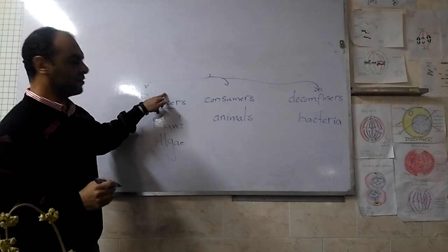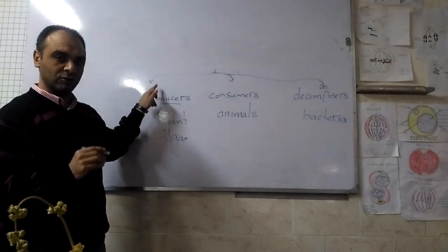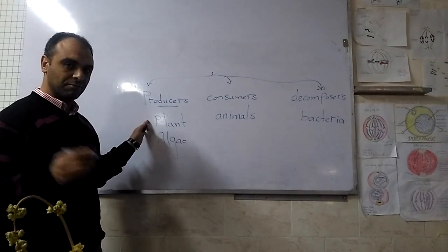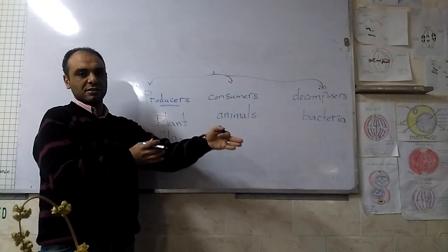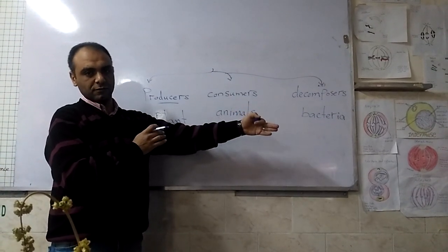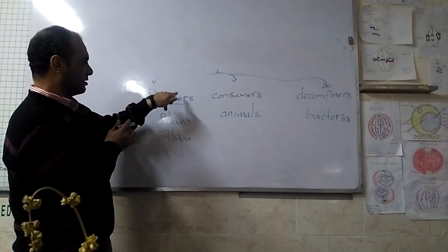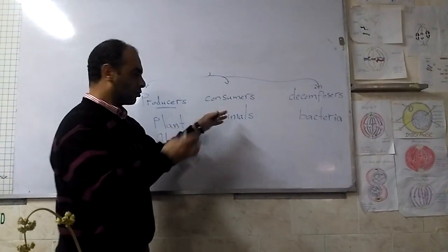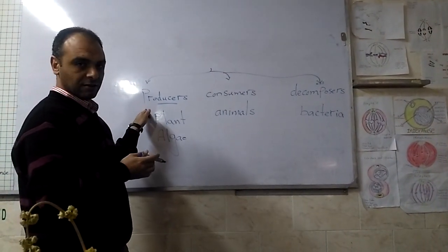Producers are living organisms which produce energy. They make their own food. Plants, through photosynthesis, make their own food, so they are producers. All living organisms consume this food.